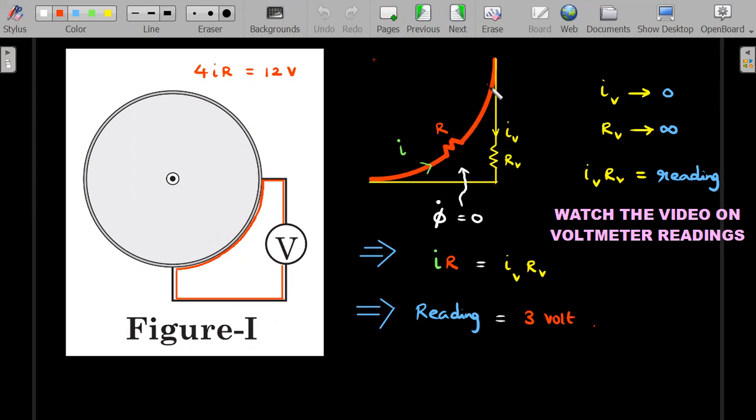There is no magnetic field inside this, so the rate of change of flux is zero. So the value of ir along this and i_v r_v, where i_v is the current flowing through voltmeter and the value of r_v is the resistance—you should all understand that that value of current that is flowing through the voltmeter would be very small because its resistance is very large, but their product is not going to be zero. That is what is the reading, and that is explained in that video that I was talking about.